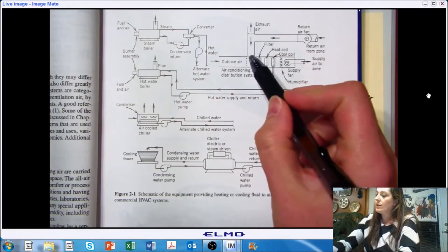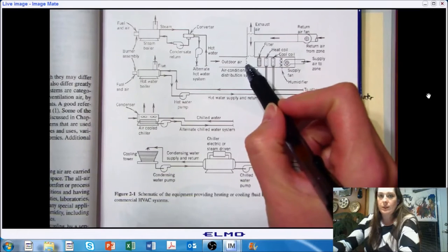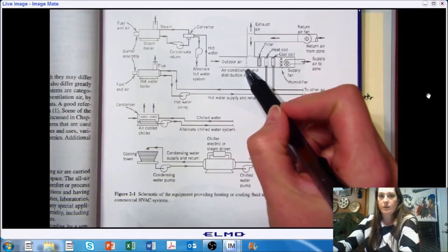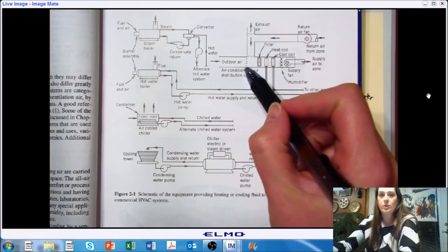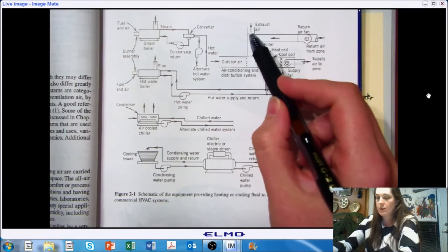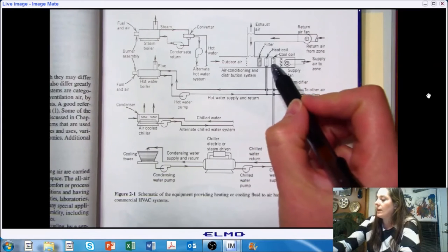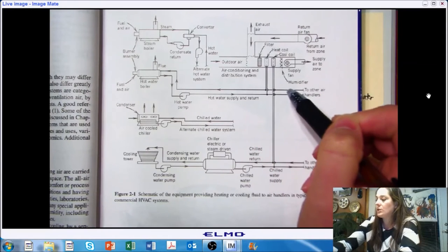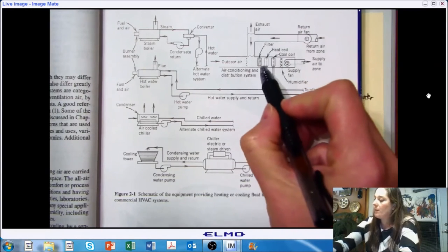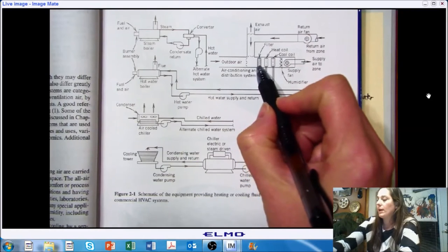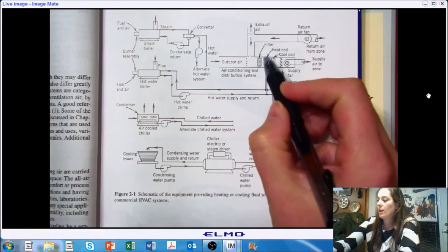So you would have a series of dampers. That's what is indicated here by these zigzag lines. Those are dampers to control the flow of the air, and the same thing, there's a set of dampers here. And then when we start to look at the components here that are actually conditioning the air, you might have a filter that would stand in the place for some of the air cleaning that we talked about before.